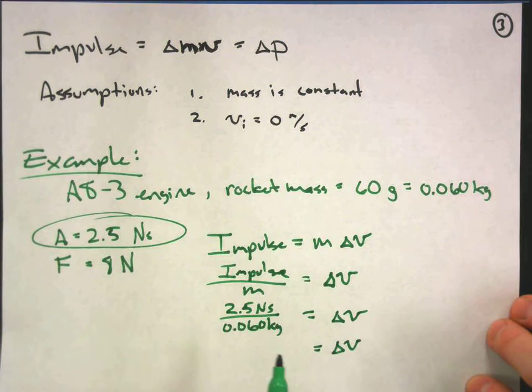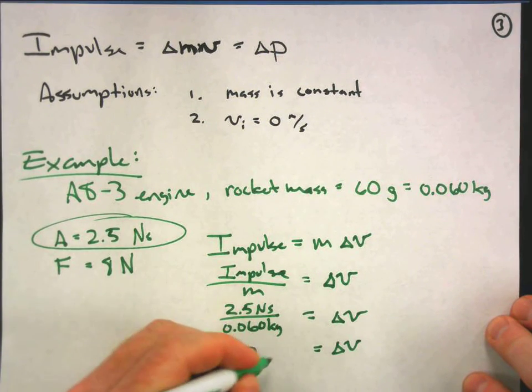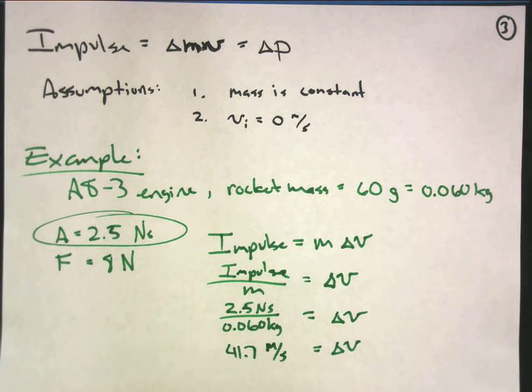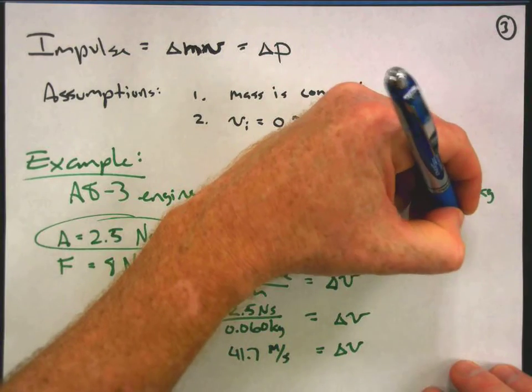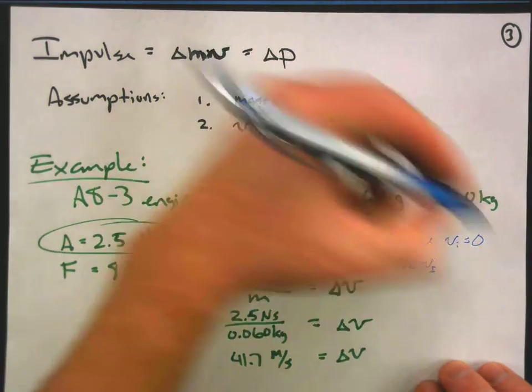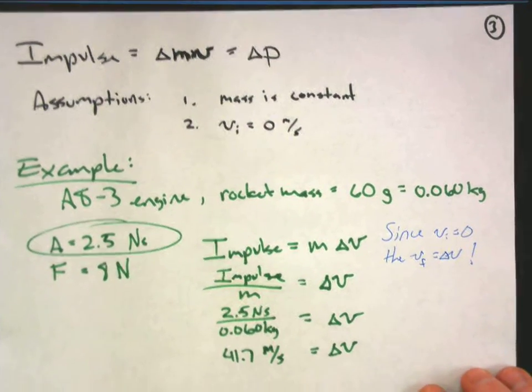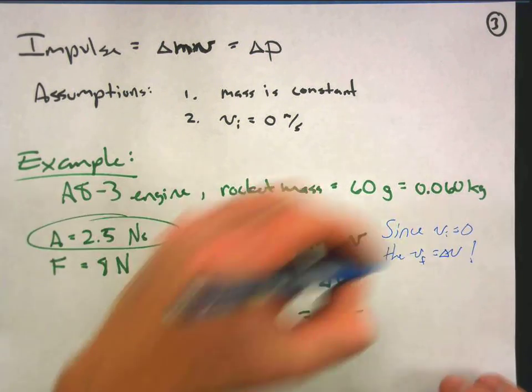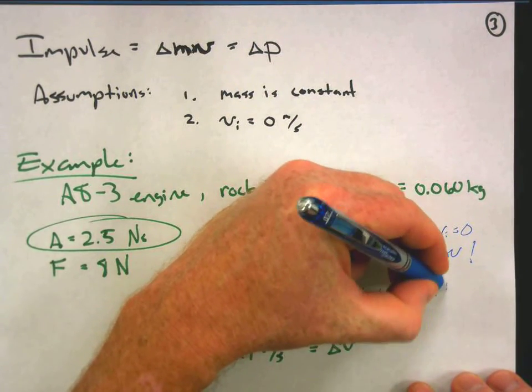So what I get here is a delta v of, round numbers, 41.7 meters per second. This is interesting. Since initial velocity was zero, the final velocity will equal the change in velocity. So how fast is this rocket going at its maximum speed when all the fuel just burns up and it's no longer producing thrust? We can say that the final velocity therefore is 41.7 meters per second.